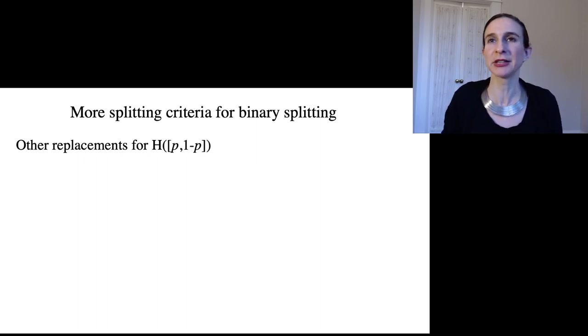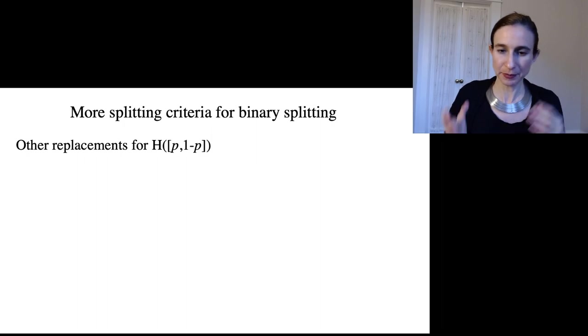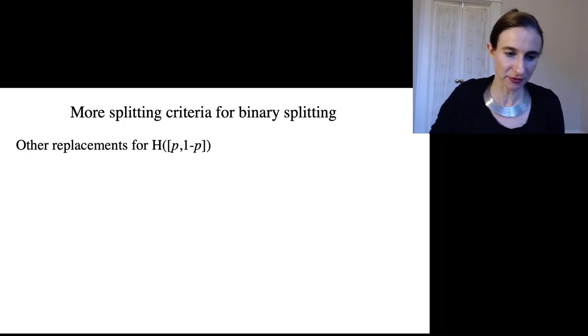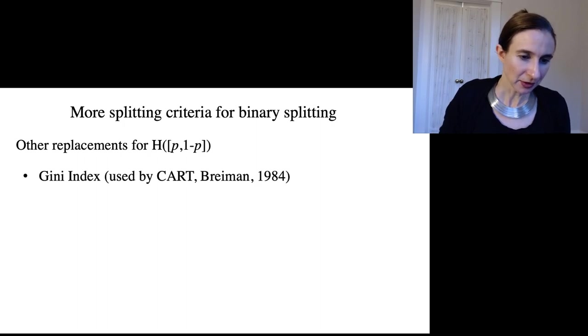You want to have leaves that are like all positive or all negative. For that, you'd look at the entropy of p, which is the fraction of positives, and then 1 minus p, which is the fraction of negatives.